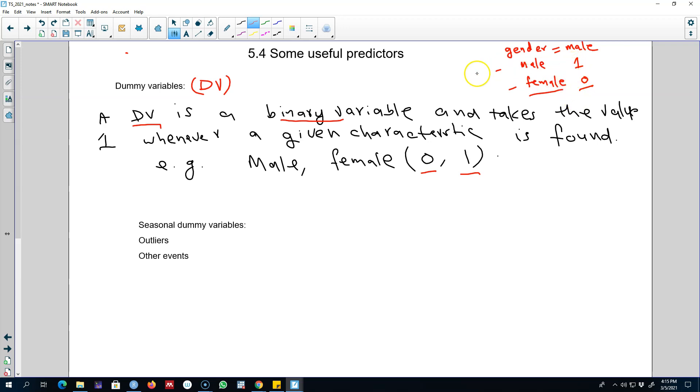Again, these variables show the presence or absence of any particular attribute in a time series. Now, there are various uses of these dummy variables in time series analysis. The first one is we can include seasonal dummies to capture the effect of various seasons on our y variable.